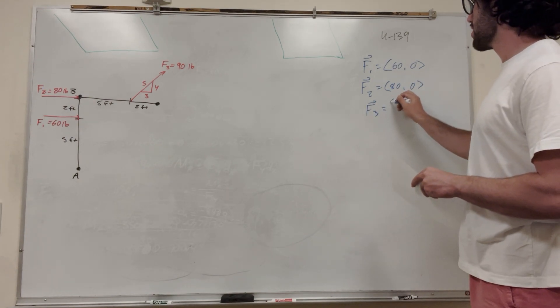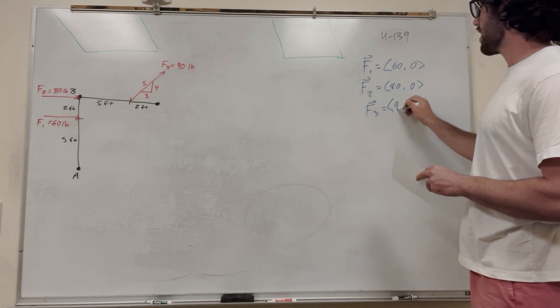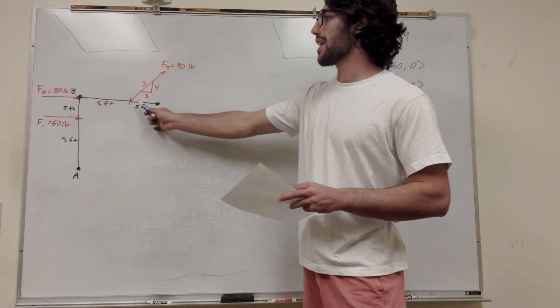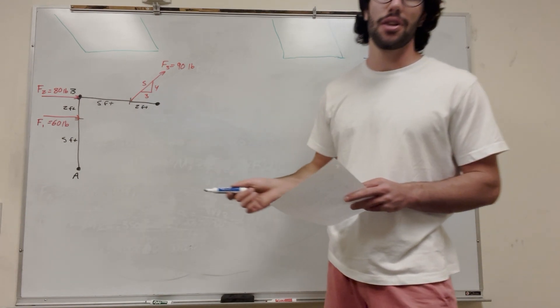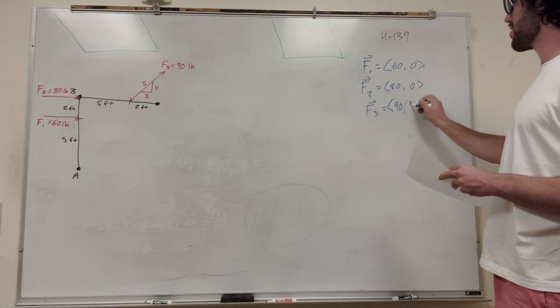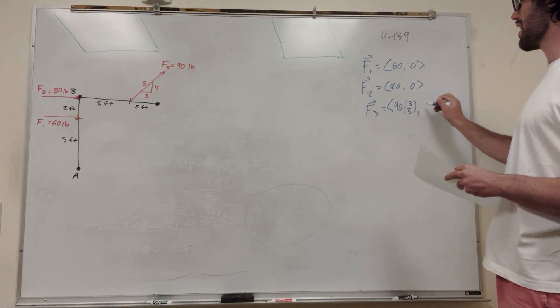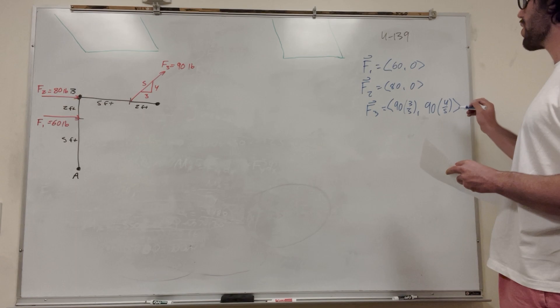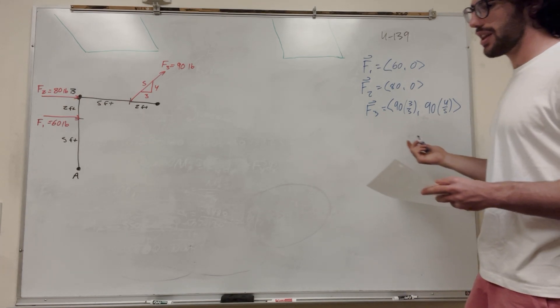And then force 3. Well, this one is a bit different. So this one goes 90, and it's going positive both ways. So it's going to be positive, but in the x direction, it's got a 3 to 5 ratio. So this 3 to 5 ratio tells us that if we take 90 and multiply it by 3 fifths, we're going to get that distance in the x direction. Now following that, if we take 90 and multiply it by 4 fifths, we're going to get its position in the y. So there we go. That's our 3 things right in this vector.